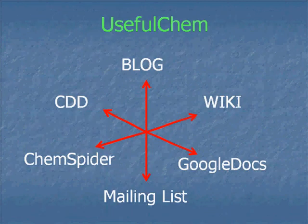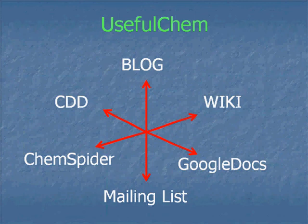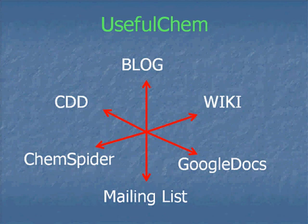In order to do this, I'm not going to use one technology. I'm actually going to piece together all kinds of different technologies, the vast majority of which are completely free and very well put together. I'll talk about using a blog, a wiki, Google Docs, CDD, ChemSpider, and even a mailing list. The old-school mailing list actually still has a role to play in all of this.